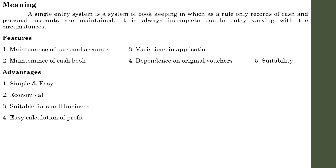Next advantage: Easy calculation of profit. In Single Entry System, it is very easy to identify profit compared to Double Entry System. In Double Entry System, if you want to know the profit during a period, you have to prepare concerned ledger accounts, a trial balance, and then a profit and loss account — only then can you identify the profit. But in Single Entry System, it is very easy to find the profit, because profit can be easily determined by comparing the opening capital and the closing capital. The difference between opening and closing capital gives you the profit of the business concern. These are the major advantages with regard to Single Entry System.